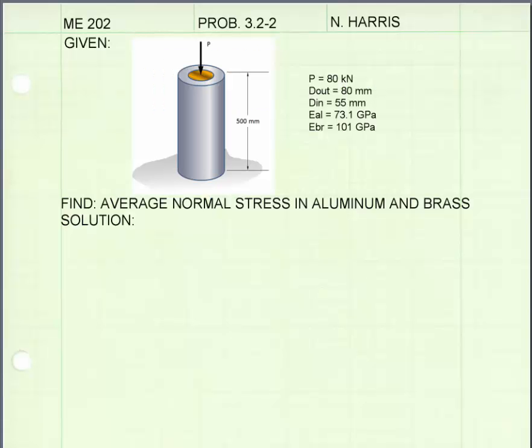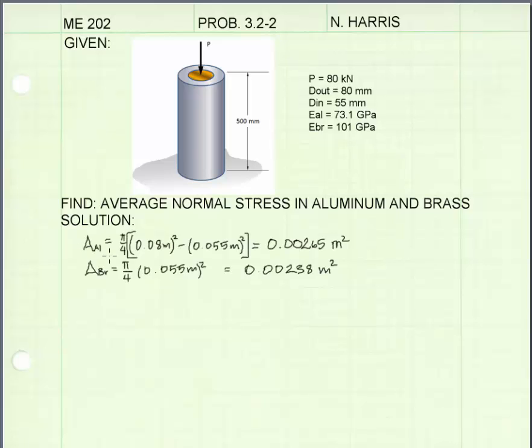The first thing I'm going to do is find the cross-sectional areas of both the aluminum and the brass. The cross-sectional area of the aluminum pipe is π/4 times the outer diameter squared minus the inner diameter squared. The cross-sectional area of the brass is 0.055 meters, the diameter, squared times π/4.